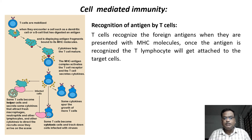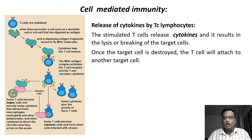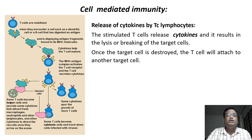Once the antigen is recognized, the T lymphocyte attaches directly to the target pathogen cells. The cytotoxic T lymphocytes — TC cells — release cytokines, resulting in lysis or breaking of target cells. These cells are directly broken down by the action of cytokine enzymes. Once the target cell is destroyed, the T cell attaches to another target cell. A single T cell can kill a large number of pathogens. This is how cell mediated immunity destroys pathogens and gives protection against infection.